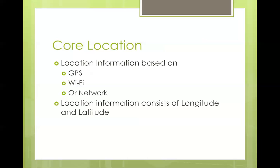Core location works in several ways. How does the device know where it is? One way is GPS positioning — global positioning system. Your device already has a GPS chip built into it, so if it's sitting outside and has access to GPS, it will communicate with it, and the GPS sends back the coordinates of your position: the longitude and latitude.